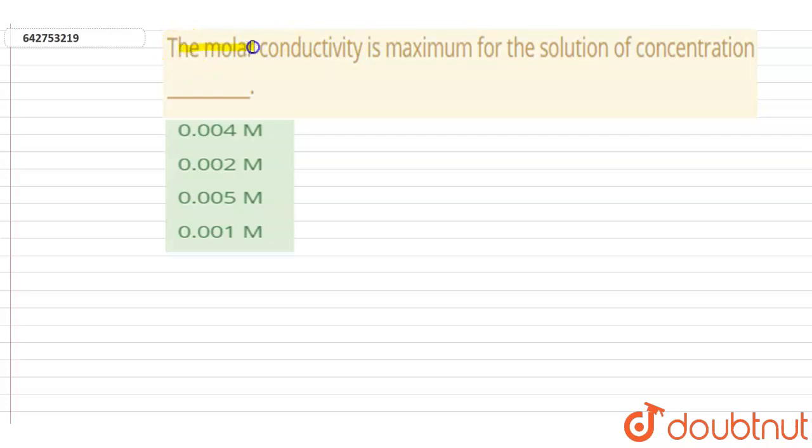The molar conductivity is maximum for the solution of concentration. So here, molar conductivity is defined as the conductivity of an electrolyte solution divided by the molar concentration of electrolyte.